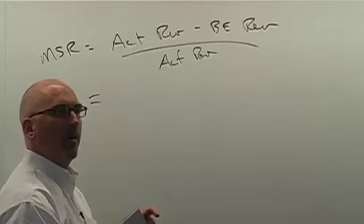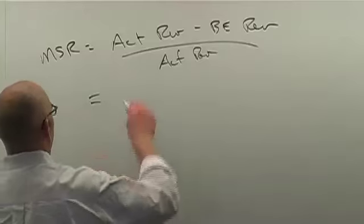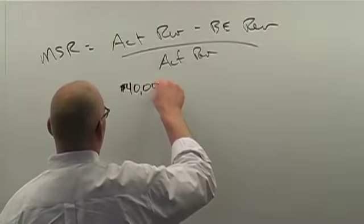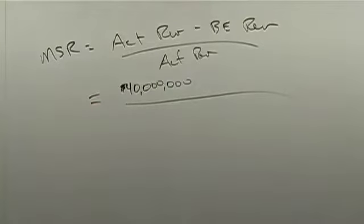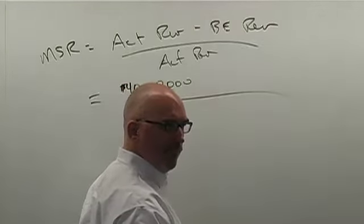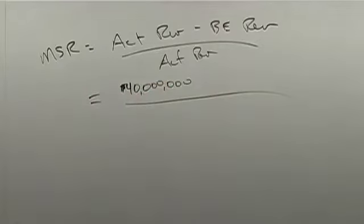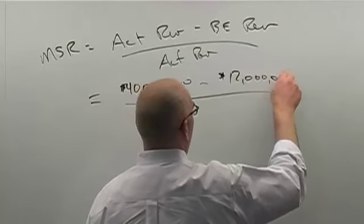I guess $40 million. Okay. And the actual revenue. Perfect. Melissa? Another number, please. The break even revenue is $12 million. The $12 million. $12 million? Yeah.